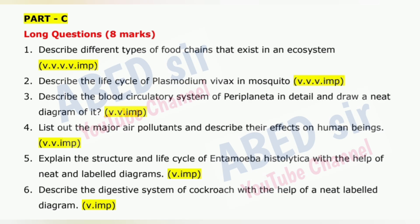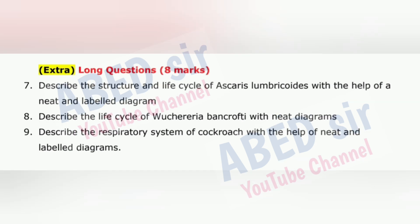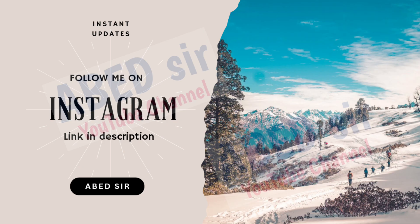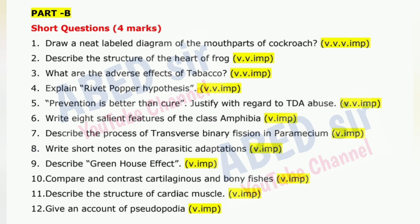On screen you may see each section's important questions. For long questions, write down your answer up to three sides of pages. Depending on the question, write down the definition with example and explanation with diagram and tables. For short questions, write down your answer on one side of the page, including definition with example, explanation, diagram and table. For very short questions, write down your answer in half a page, including definition with diagram and example.